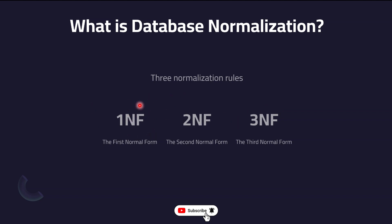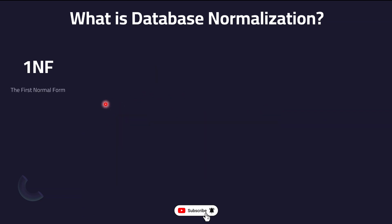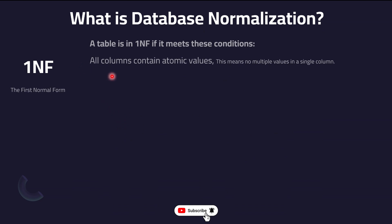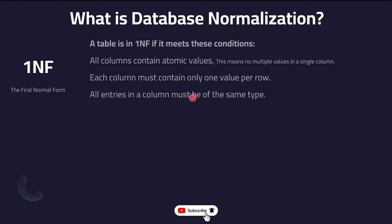Let's start with 1NF. A table in a database is in First Normal Form if it meets three conditions. Number one: all columns contain atomic values, meaning no multiple values in a single column. As we saw in the earlier example, having two product IDs or two prices in one column is completely wrong. The second condition is that each column must contain only one value per row — one value per cell. The third condition is that all entries in a column must be of the same data type.